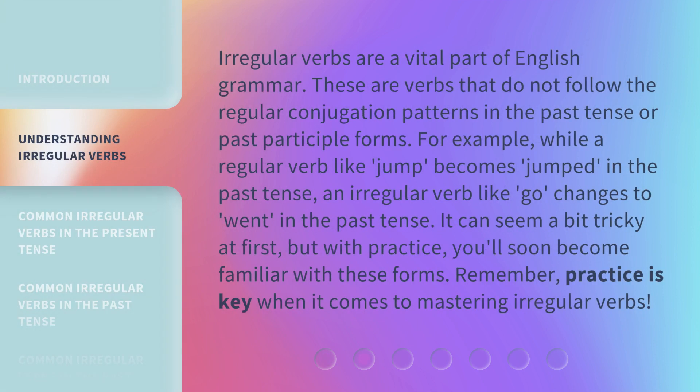Irregular verbs are a vital part of English grammar. These are verbs that do not follow the regular conjugation patterns in the past tense or past participle forms. For example, while a regular verb like 'jump' becomes 'jumped' in the past tense, an irregular verb like 'go' changes to 'went' in the past tense. It can seem a bit tricky at first, but with practice, you'll soon become familiar with these forms.